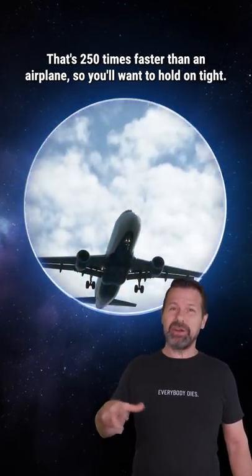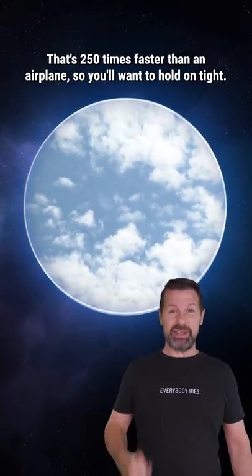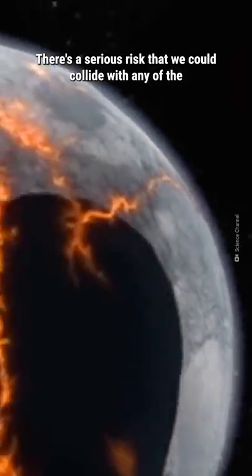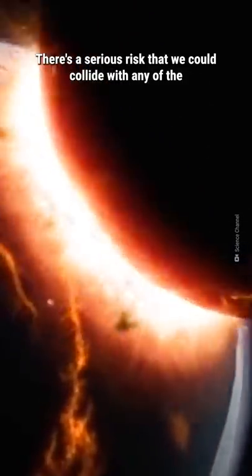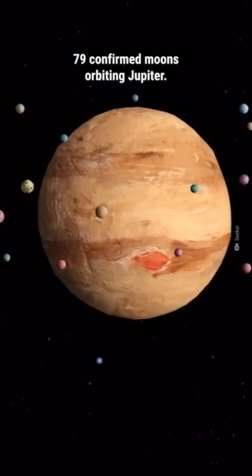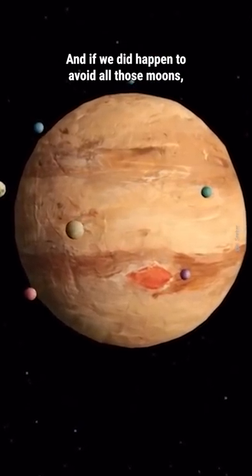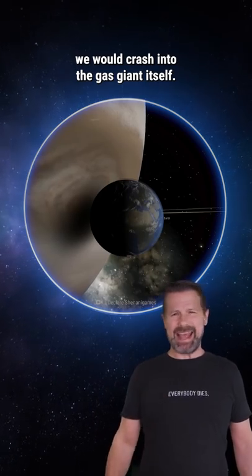That's 250 times faster than an airplane, so you'll want to hold on tight. There's a serious risk that we could collide with any of the 79 confirmed moons orbiting Jupiter. And if we did happen to avoid all those moons, we would crash into the gas giant itself.